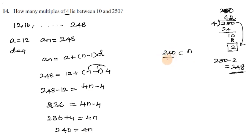240 divided by 4: 1 times 4 is 4, 6 times 4 is 24, so the value is 60. There are 60 multiples of 4 between 10 and 250.